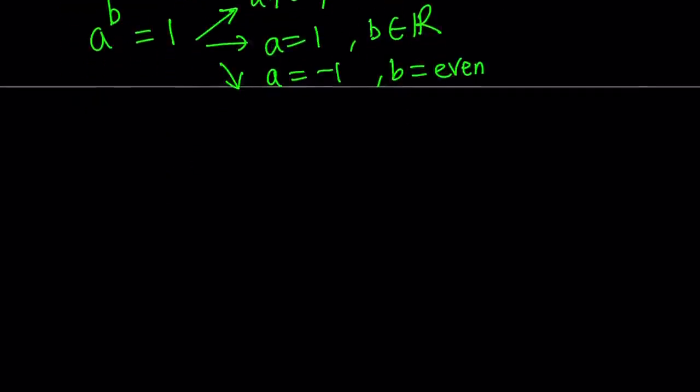First case. x to the power x plus 1 equals 1 implies x does not equal 0 and x plus 1 equals 0. This gives us x equals negative 1. We're going to go ahead and finish this up and then we'll check each solution.